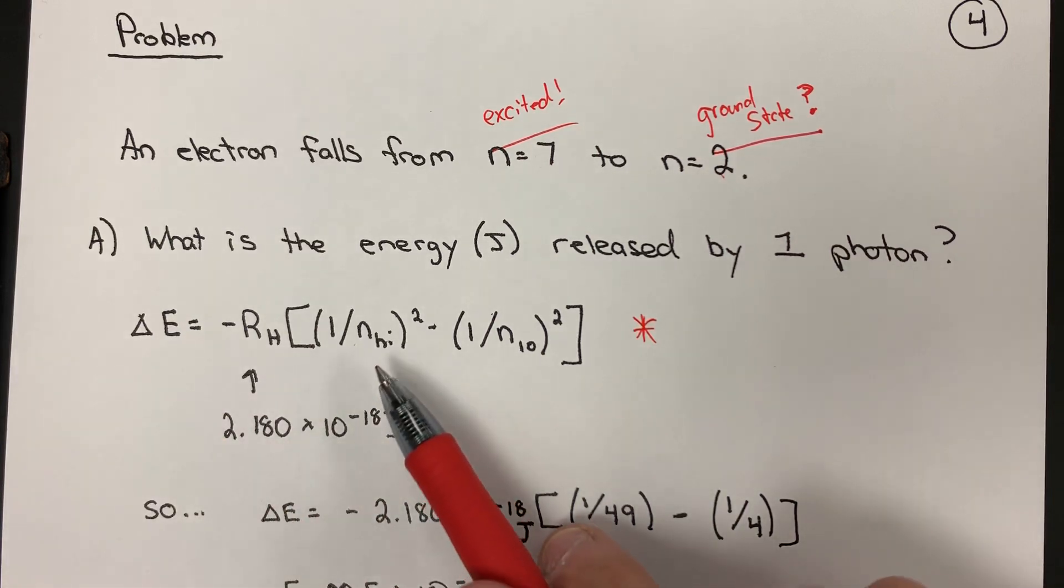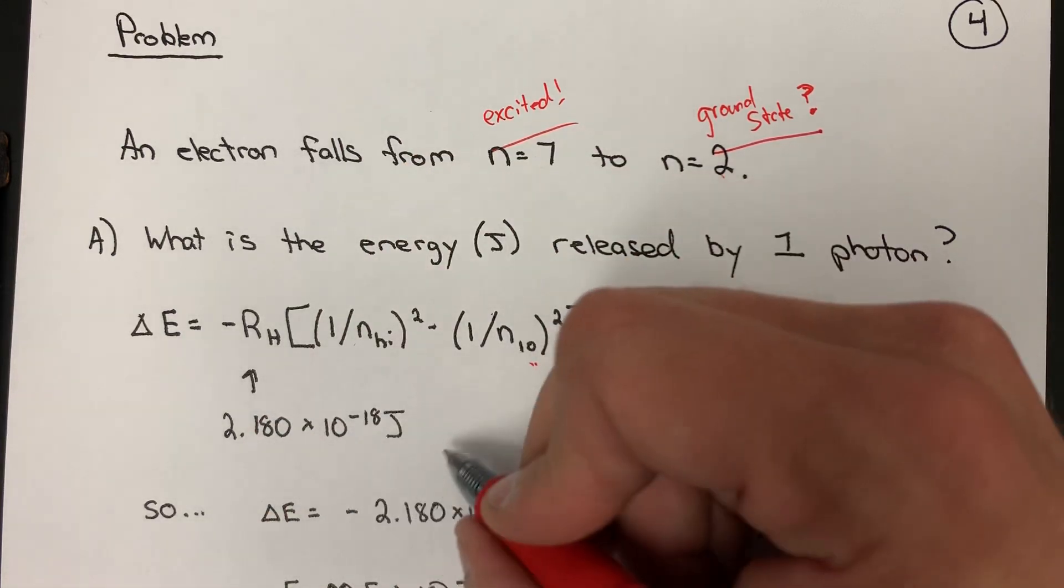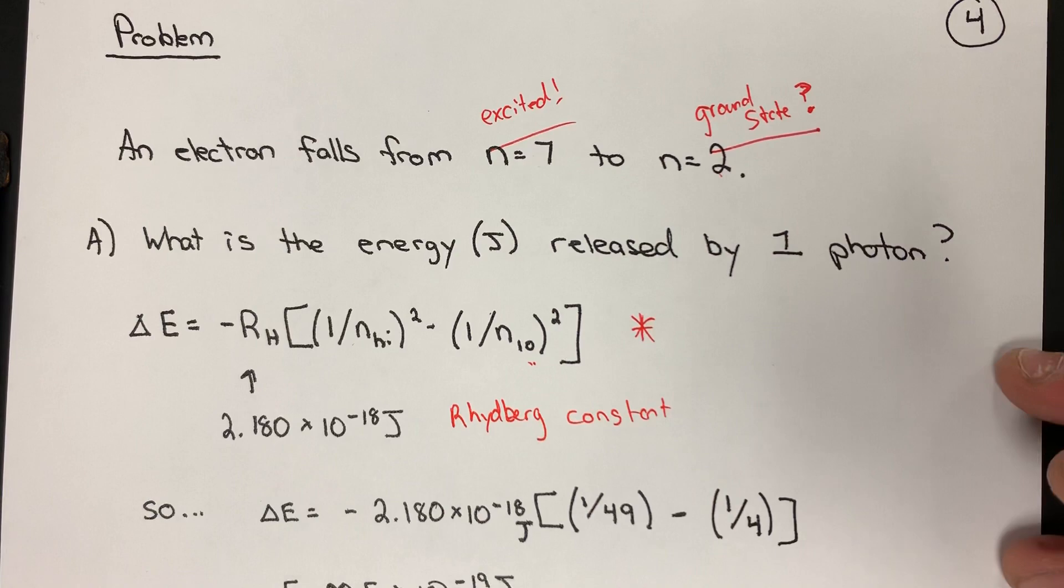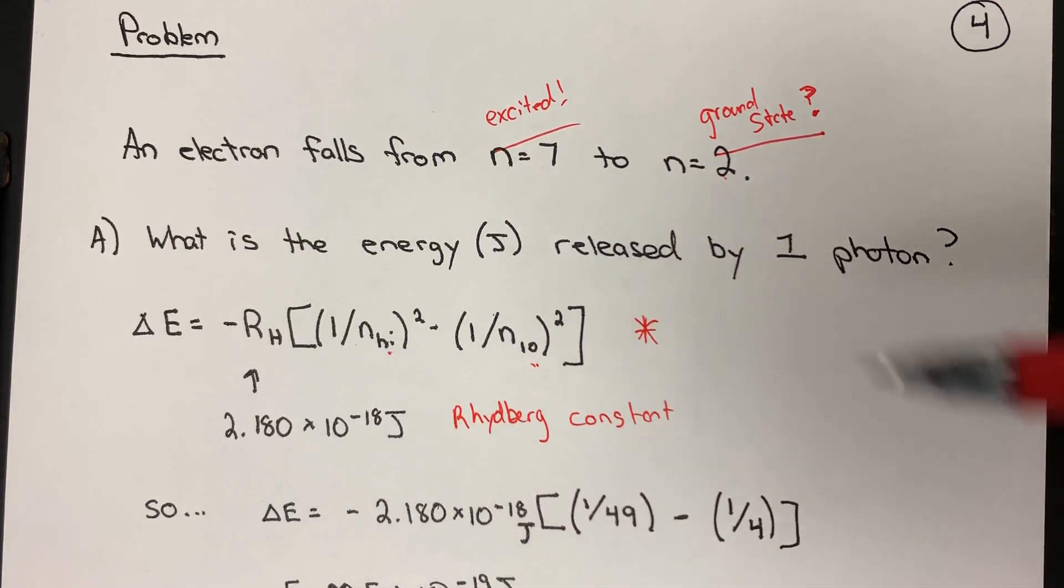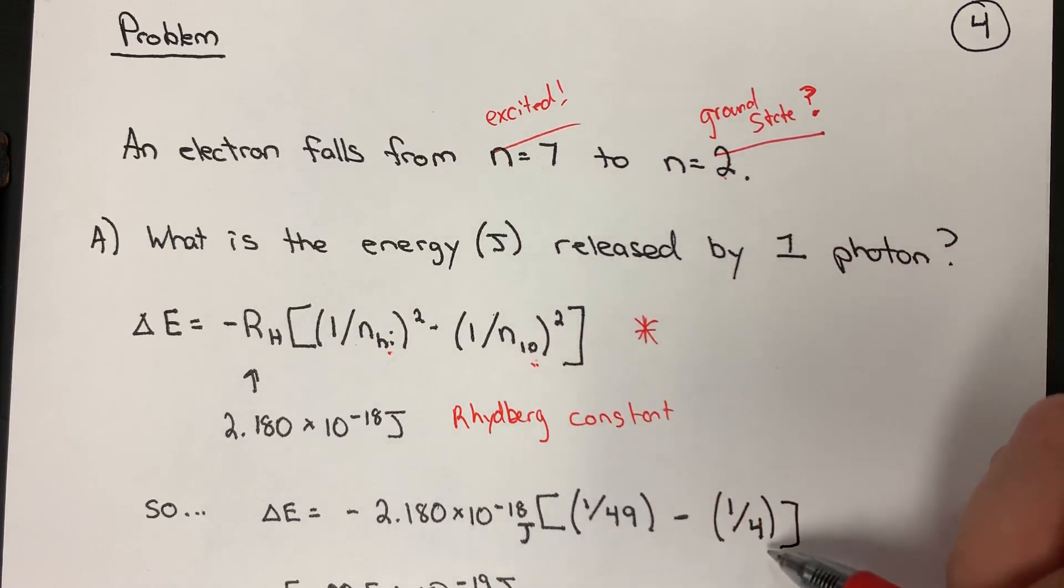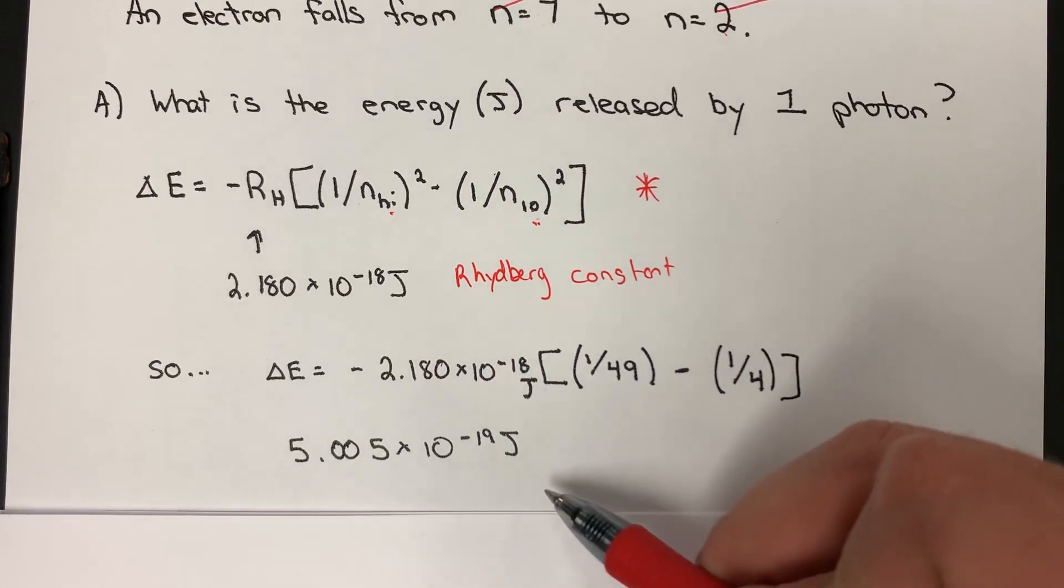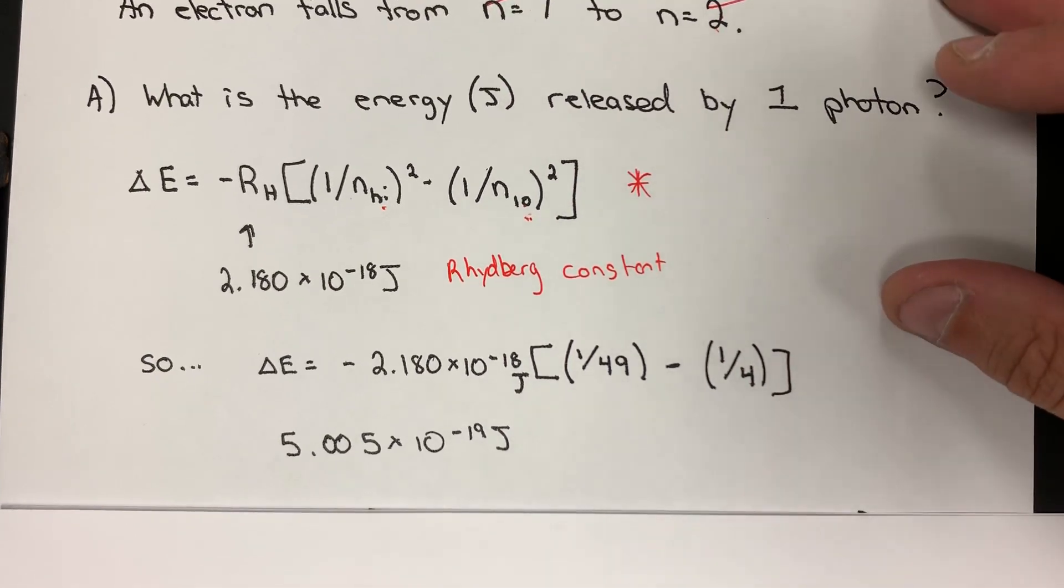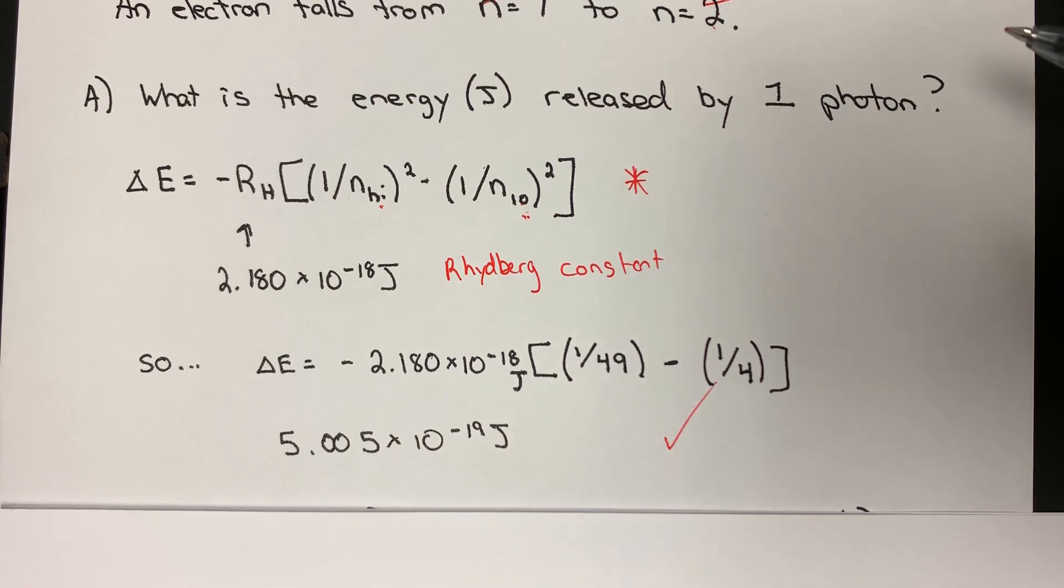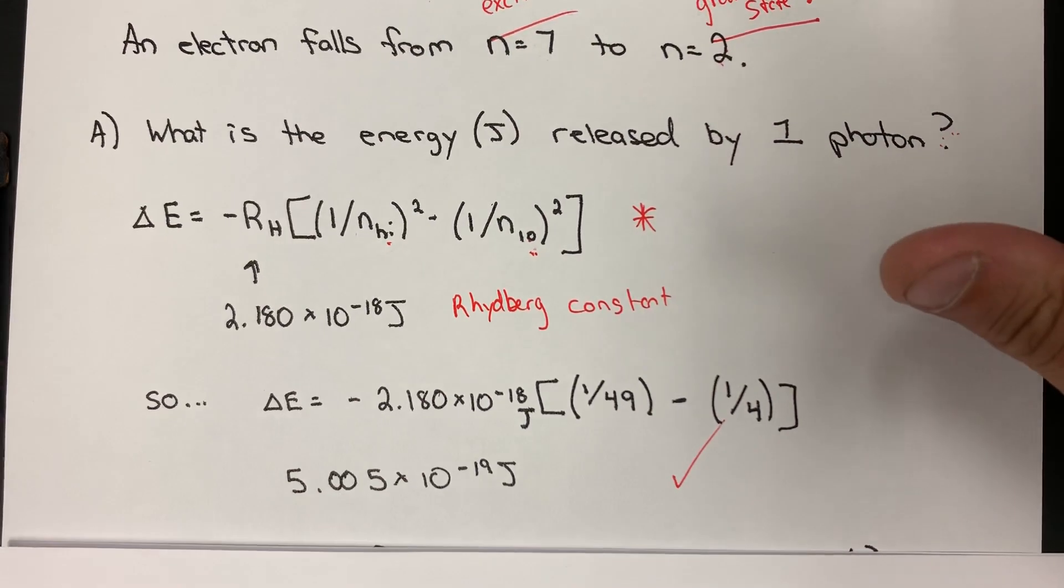The equation that we have in hand is the following. We can find the change in energy as an electron goes from an n high to an n low state by employing what's called the Rydberg constant. And we plug in some values. So seven for n high, and we square this term, we get one over 49. When we plug in two for the n low and square that term, we get one over four. We crunch the numbers, our calculator shoots out a nice 5.005×10⁻¹⁹ joules. So some minimal amount of energy that's actually being released there. So this is step number one. Can we determine the amount of energy that is released by a single photon as it transitions from n7 to n2? And we've done that. Largely plug and chug on this one.